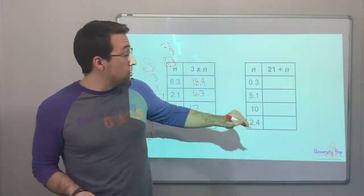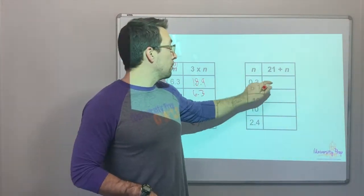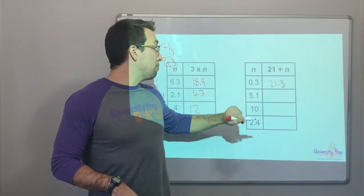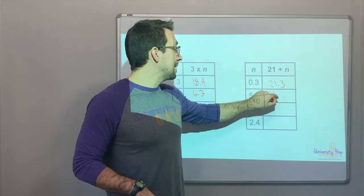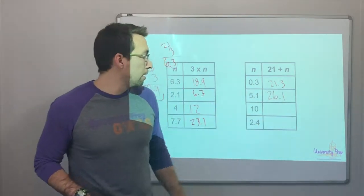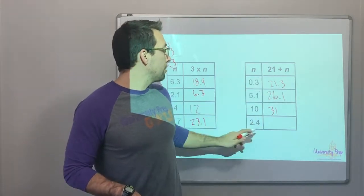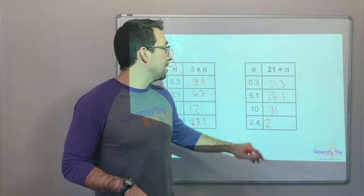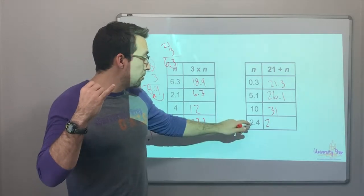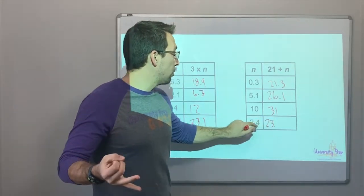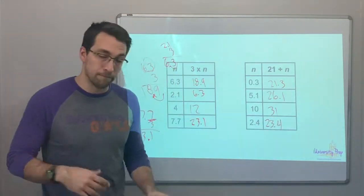Addition. 21 plus 0.3. So, 21.3. 21 plus 5.1. So, that would be 26.1. 21 plus 10 is 31. And then 21 plus 2.4. So, 22, 23.4. That's our answer.